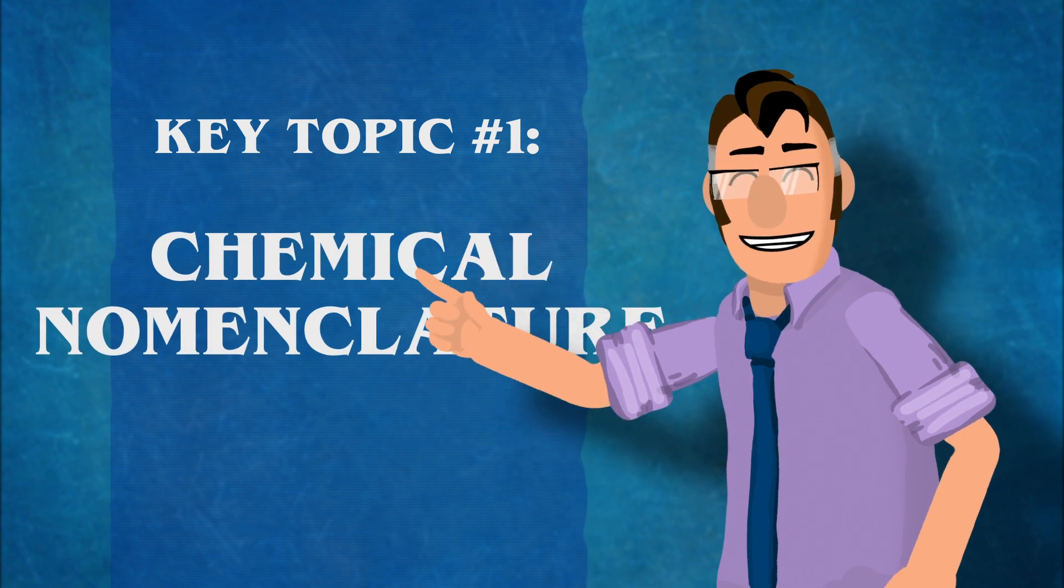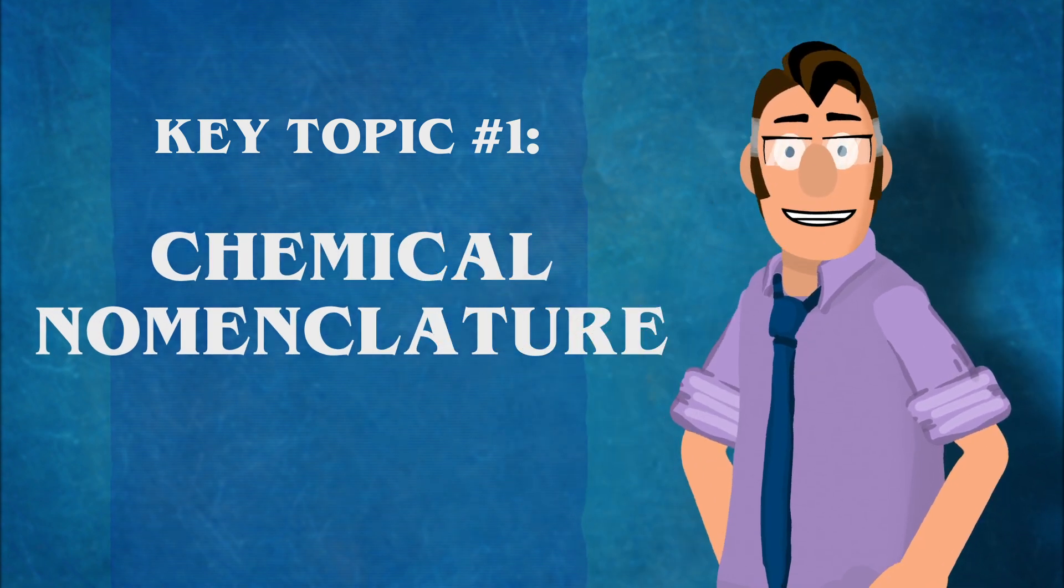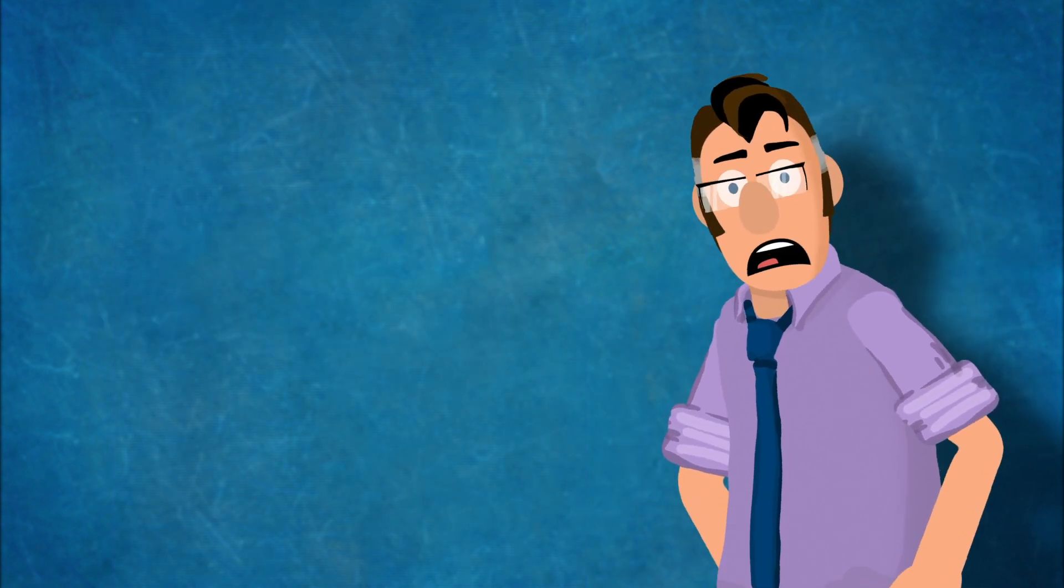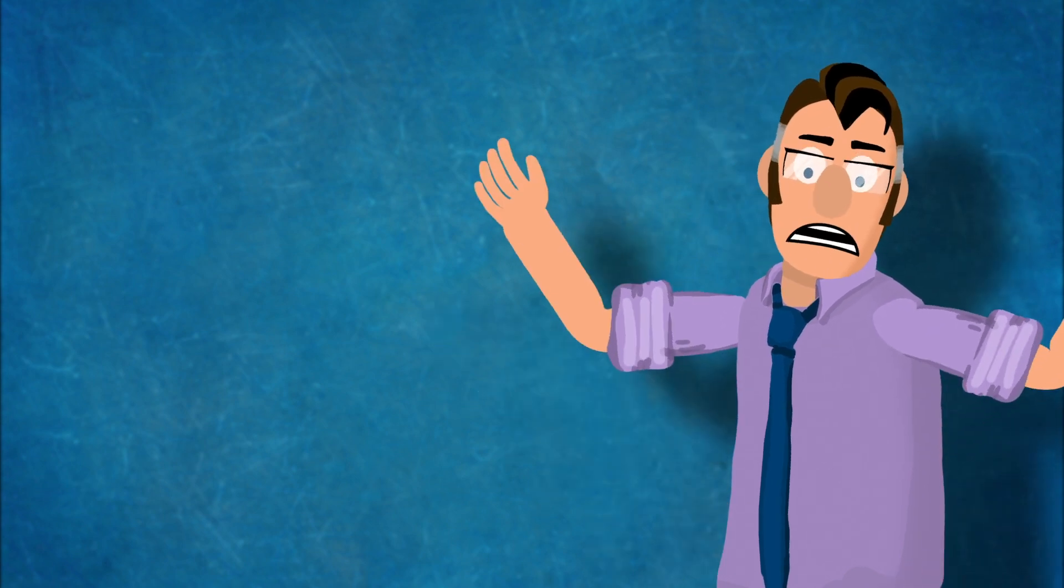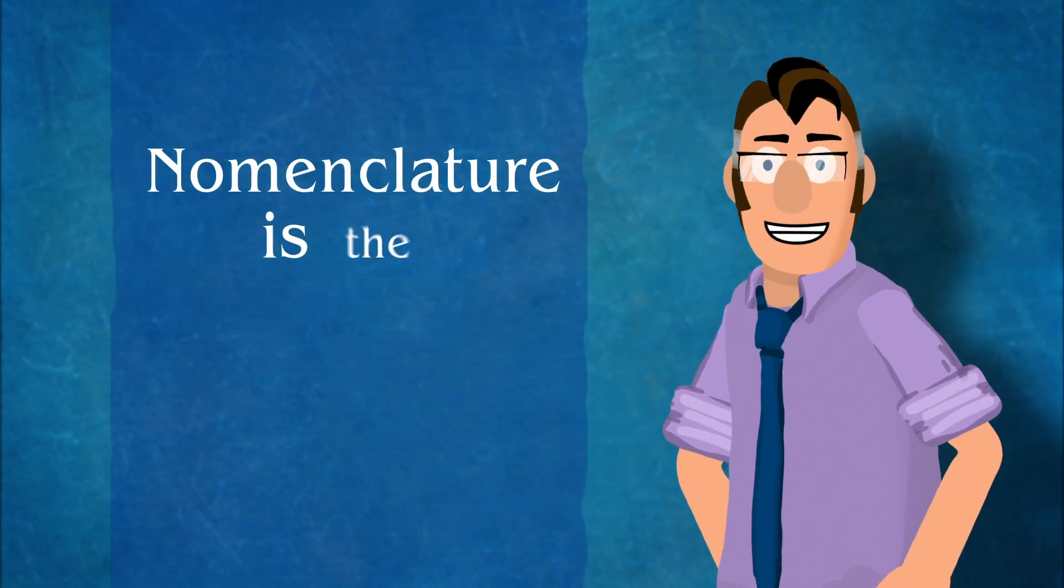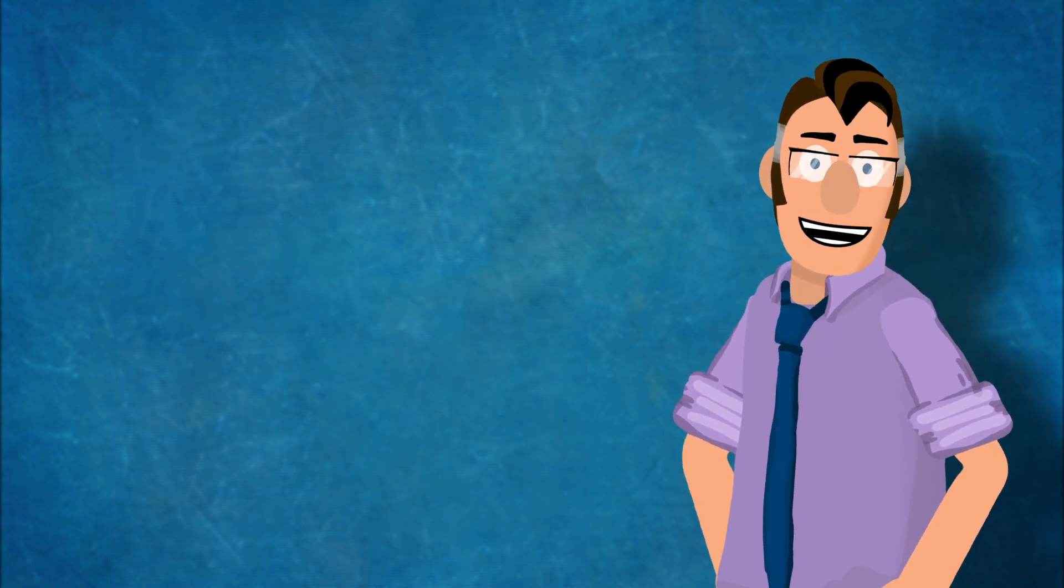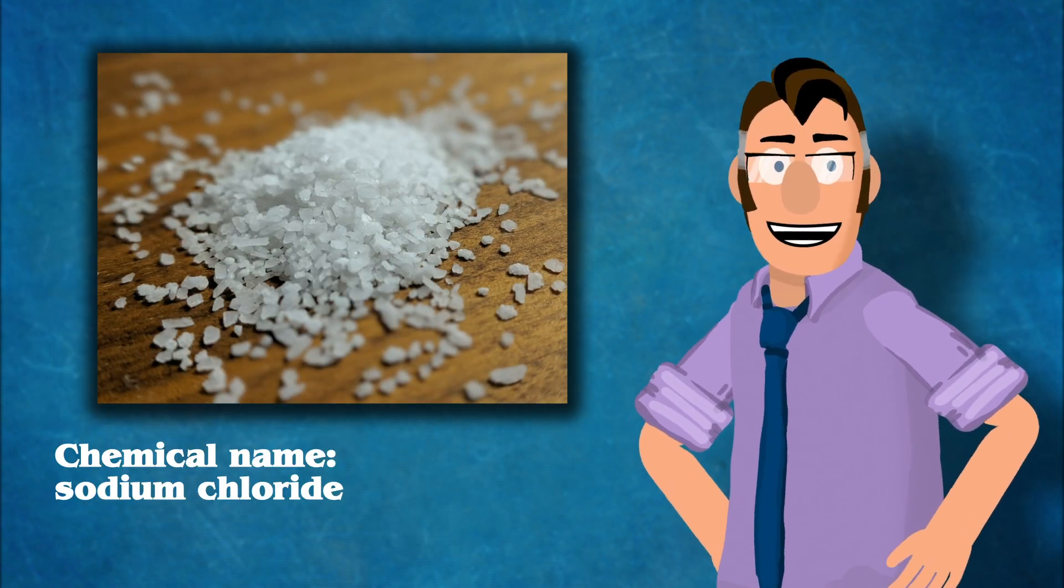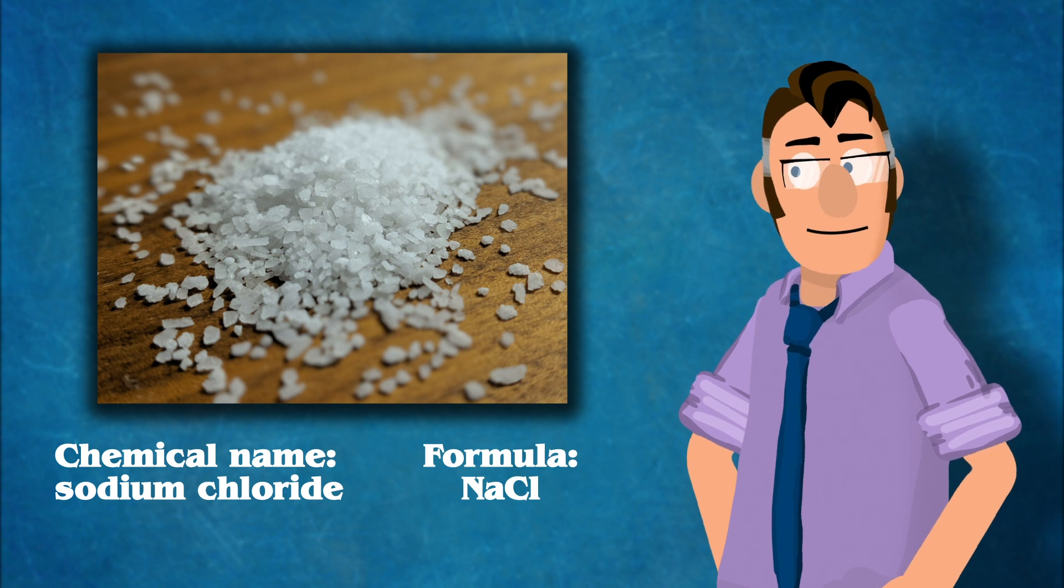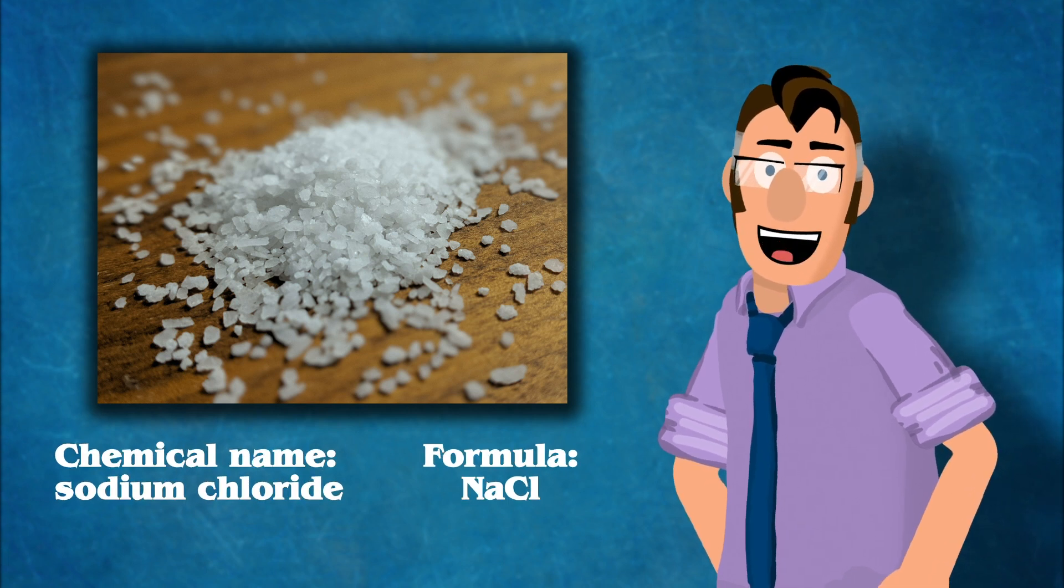Topic number one is chemical nomenclature. This is a big one. If you don't learn how to name chemical compounds correctly, you are dead in the water. Nomenclature is the organizing language of chemistry. Everything is represented both by a chemical name and a chemical formula, and you have to be comfortable jumping back and forth.